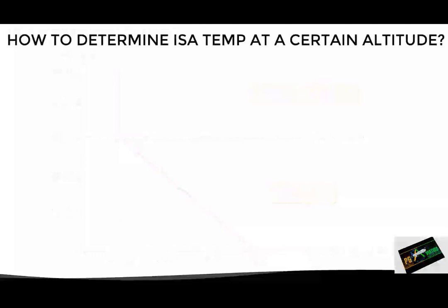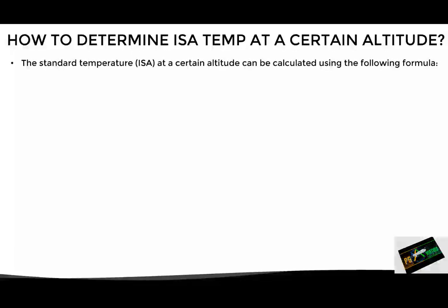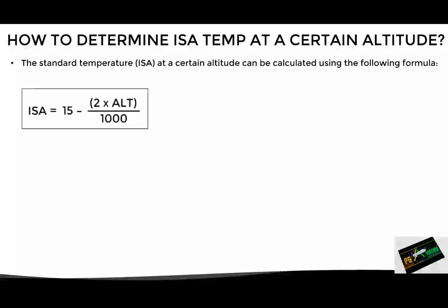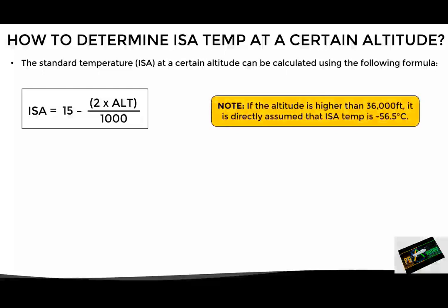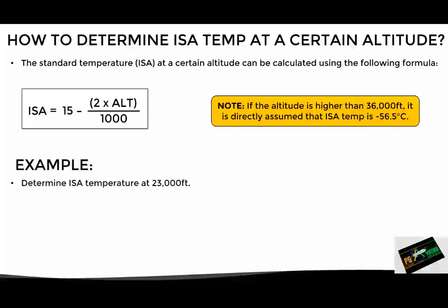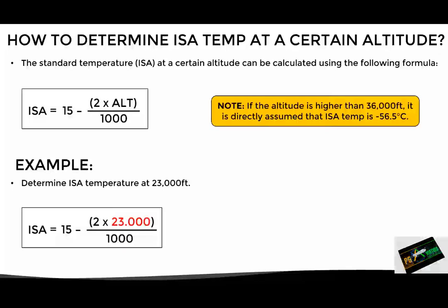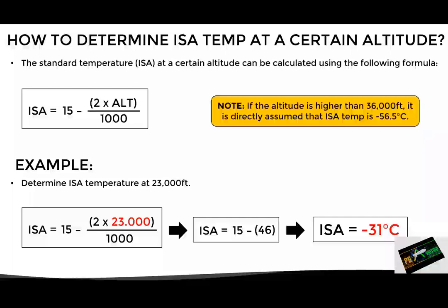In many occasions it is necessary to determine the standard temperature at a certain altitude. Although we could calculate it mentally, we can also use the following formula: ISA temperature equals 15 minus 2 times altitude divided by 1000. A side note: if the altitude is higher than 36,000 feet, the standard temperature is directly assumed to be minus 56.5 degrees Celsius. Let's see an example — if we want to determine the standard temperature at 23,000 feet, we just replace the altitude in the formula with 23,000, and after doing the math we obtain minus 31 degrees Celsius.